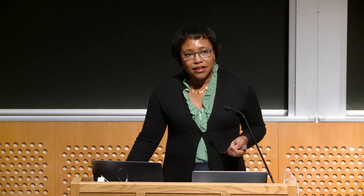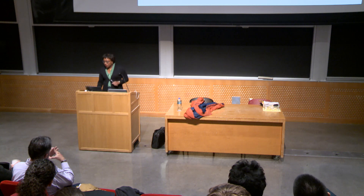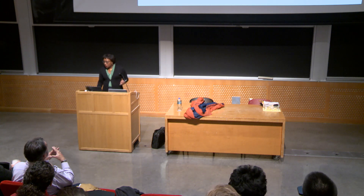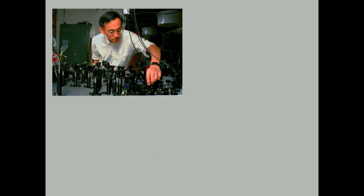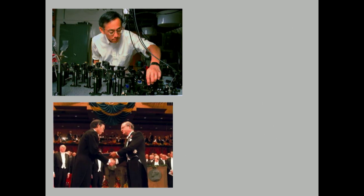After obtaining his PhD at Berkeley, Professor Chu remained as a postdoc for two years before joining Bell Labs, where he and several co-workers carried out his Nobel Prize-winning laser cooling work. His early research focused on atomic physics, developing laser cooling techniques and magneto-optical trapping of atoms using lasers. He and his co-workers at Bell Labs developed a way to cool atoms by employing six laser beams opposed in pairs and arranged in three directions at right angles to each other. Trapping atoms with this method allowed scientists to study individual atoms with great accuracy, and for this work he received the Nobel Prize. He left Bell Labs and became a professor of physics at Stanford in 1987.